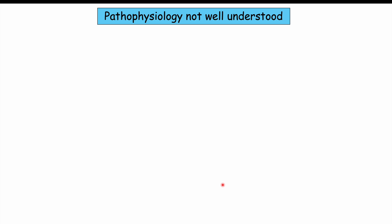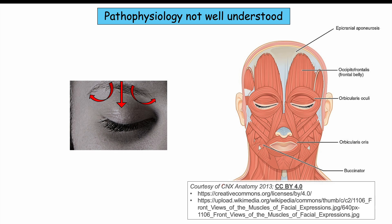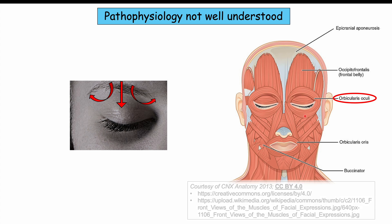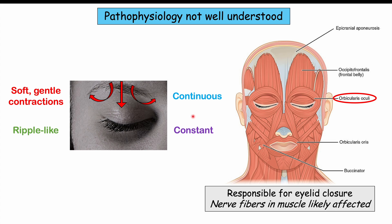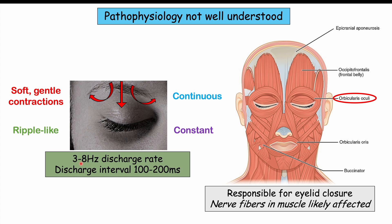The pathophysiology of this condition is not well understood, but what is known is that the orbicularis oculi — the muscle that surrounds the eye and is responsible for eyelid closure — is affected. The nerve fibers leading to the orbicularis oculi muscle are likely affected, leading to soft, gentle, ripple-like contractions that are often continuous. Measurements show a three to eight hertz discharge rate with a discharge interval of 100 to 200 milliseconds.